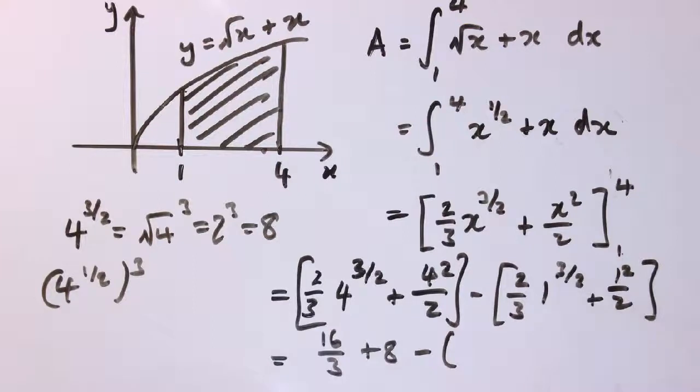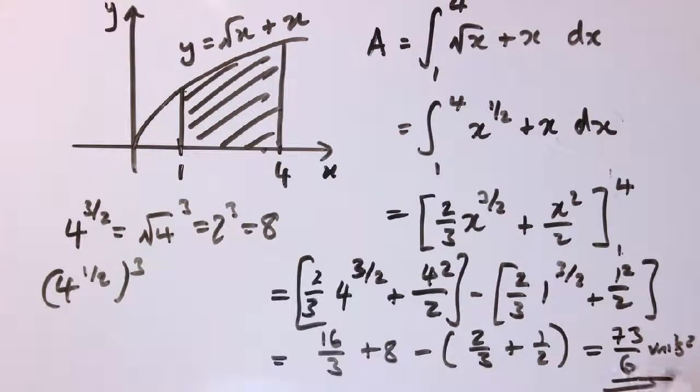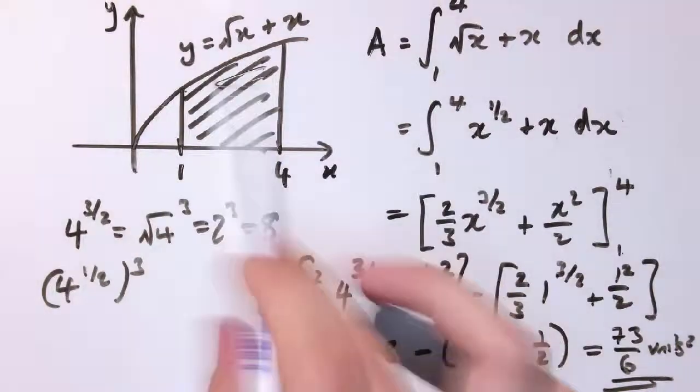So we've got 2 thirds here plus 1 half. Now, you can either do this in your calculator or work out the fractions by putting them over a common denominator, but let me just say, once you've worked all of that out, you get 73 over 6 units squared. Okay, so that would be the area enclosed here.